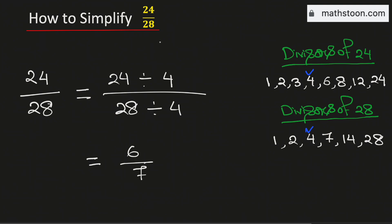And this fraction cannot be simplified further. So, 24 over 28 simplified is equal to 6 over 7. And this is our final answer.